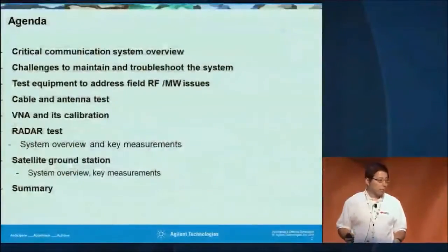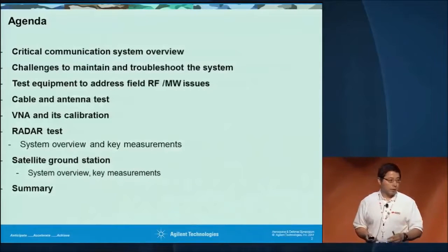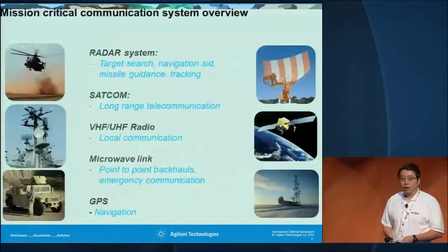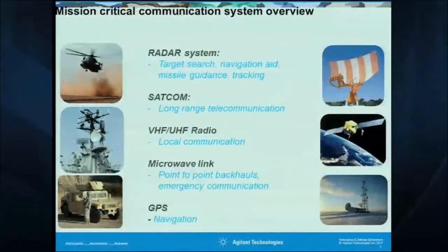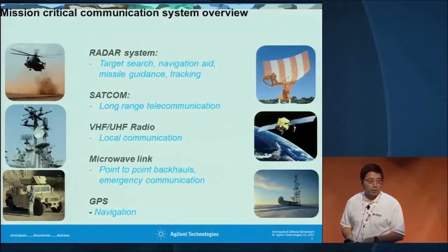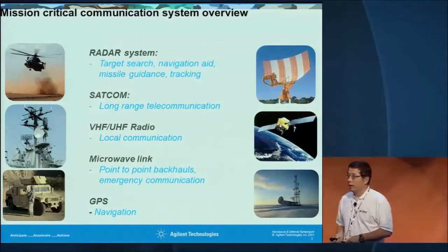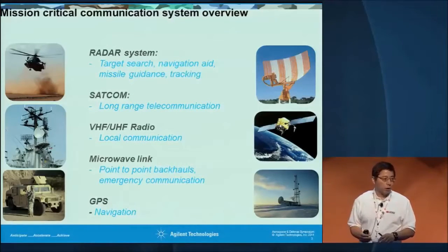We're going to cover a couple of aspects. First, we'll look at what the total communication system is about for military. Here's a rough overview of what the military or mission-critical communication system involves. This typically includes radar, which is an almost ubiquitous component inside any type of communication system — whether for search radar or for the FAA to track airplanes. SATCOM is usually for long-range communication.